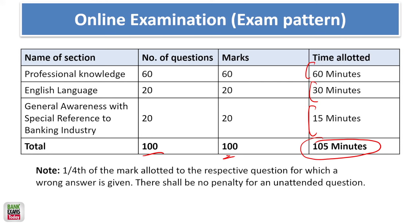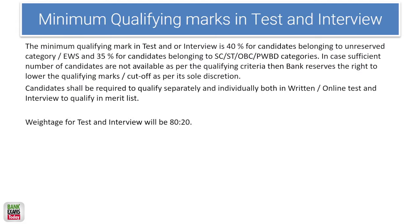There is a sectional cutoff — you need to clear the cutoff of each section. Negative marking applies: one-fourth negative marking for each wrong answer. Minimum qualifying marks are 40% for General category and 35% for SC, ST, OBC and PWBD category candidates. Candidates need to qualify separately in both the written online test and interview. The weightage for written test and interview is 80% and 20% respectively.